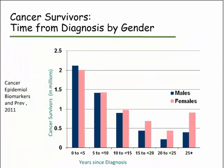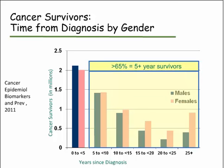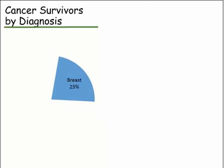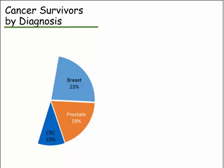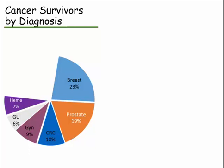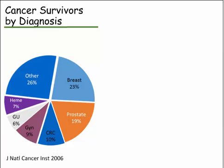About two-thirds of our cancer survivors are five-plus-year cancer survivors, fairly far along from their diagnosis, including both men and women, although more women are among those who are 25-plus-year survivors. Looking at the survivorship landscape by diagnosis: a quarter are breast cancer survivors, about one-fifth are prostate cancer, 10% are colorectal cancer survivors, and the rest include GYN cancers, genitourinary cancers, hematological malignancies such as lymphomas, leukemias, and myelomas. Importantly, 50% of cancer survivors consist of breast, prostate, and colorectal cancer.